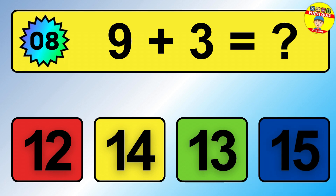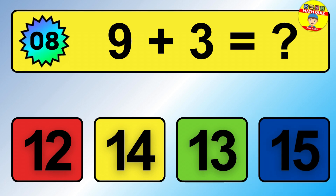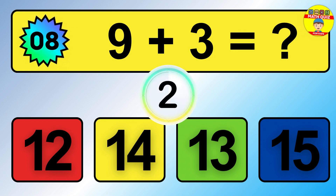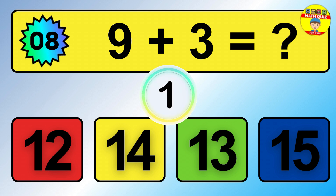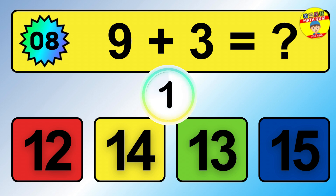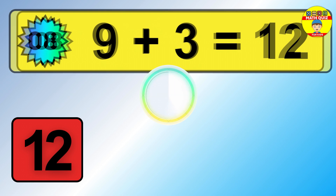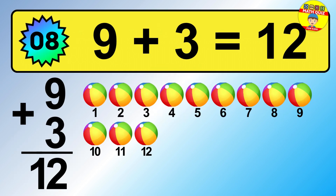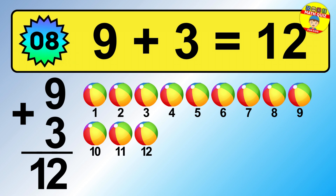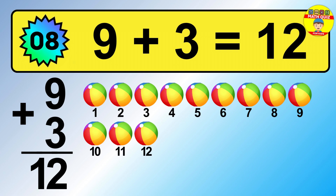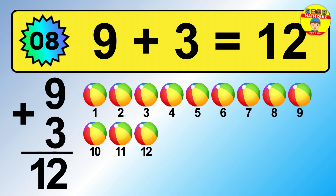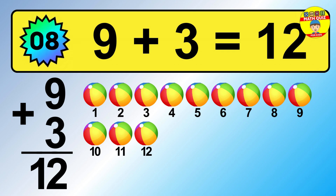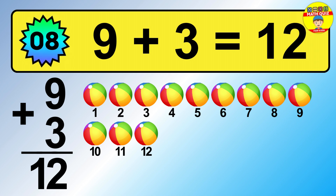Question 8. 9 plus 3 equals what? So the answer is 9 plus 3 is 12. Let's count it: 1, 2, 3, 4, 5, 6, 7, 8, 9, 10, 11, 12.